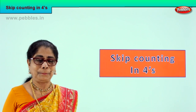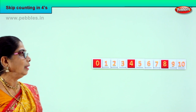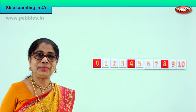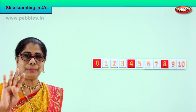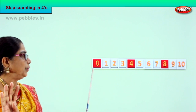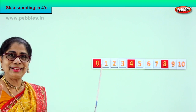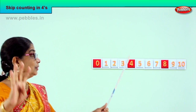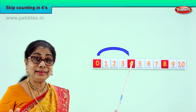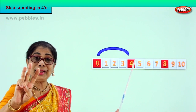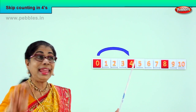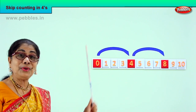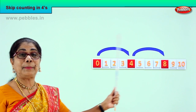Look what you have. Alright, 0 to 10. How do we count skip counting in four? We have zero here, 1, 2, 3, 4. You got the four colored? Up to four — 5, 6, 7, 8. Good, so 0, 4, 8. That's the pattern.